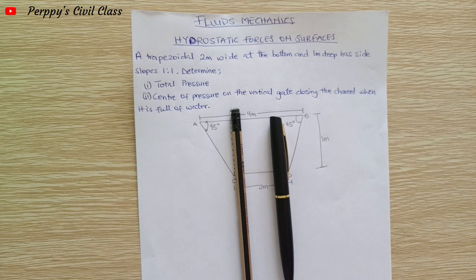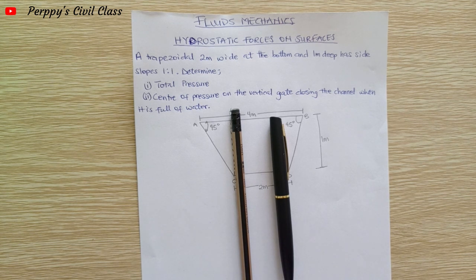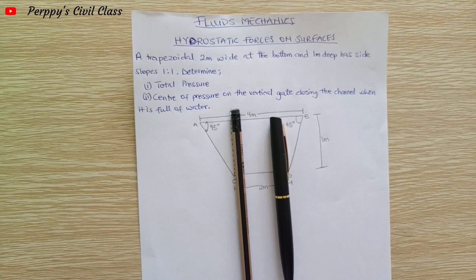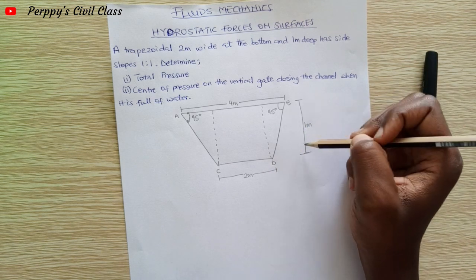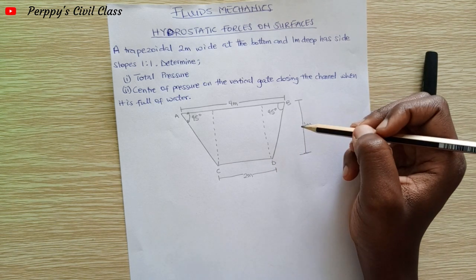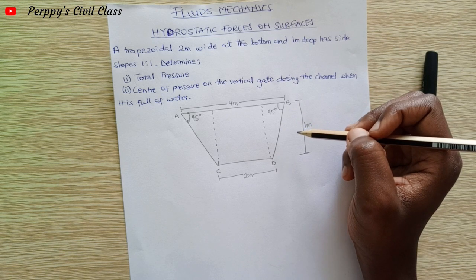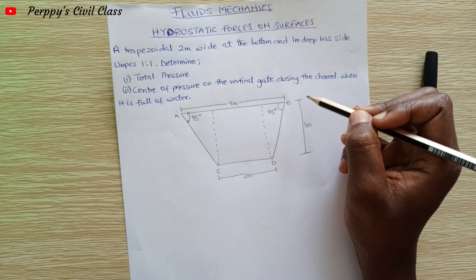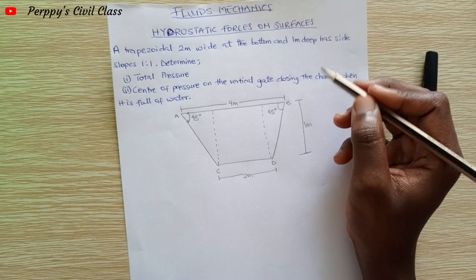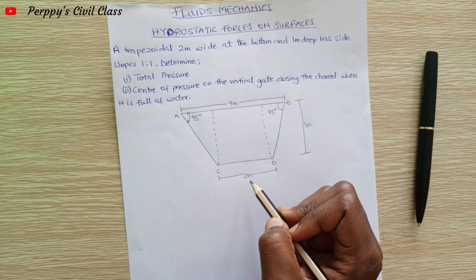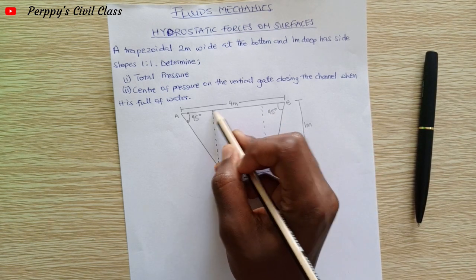Welcome to Peppy Civil Class. Today's question is under hydrostatic forces on surfaces, fluid mechanics. The question reads: a trapezoidal channel, two meters wide at the bottom and one meter deep, has side slopes of one-to-one. We need to determine the total pressure and the center of pressure on the vertical gate closing the channel when it is full of water. We can see two shapes in this trapezoid.